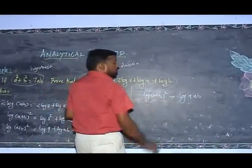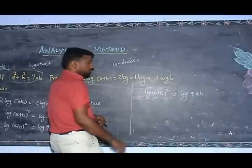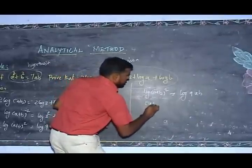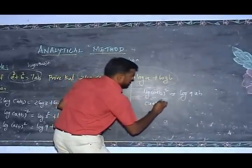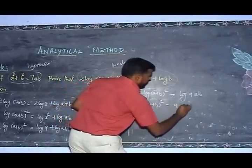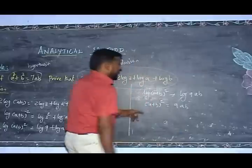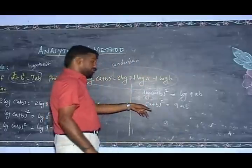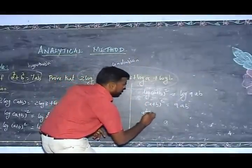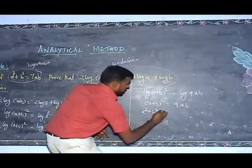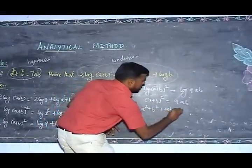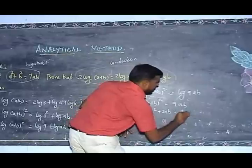Here, log(A plus B) whole squared equals log 9AB, so we get A plus B whole squared equals 9AB. Then expanding A plus B whole squared: A squared plus B squared plus 2AB equals 9AB.